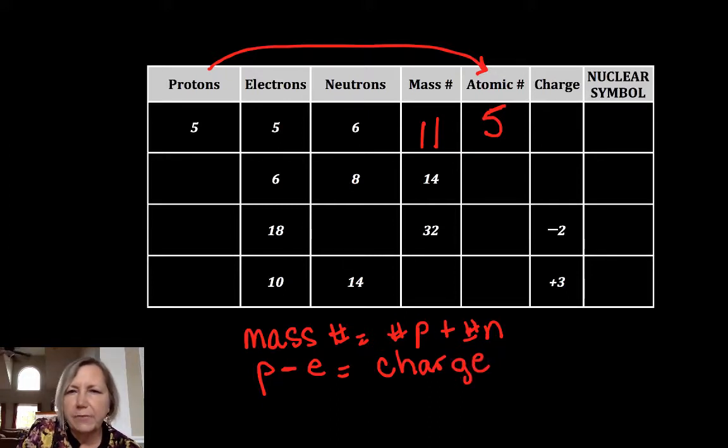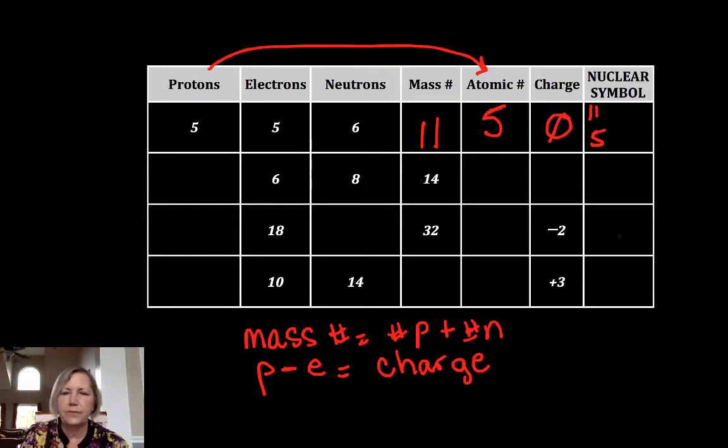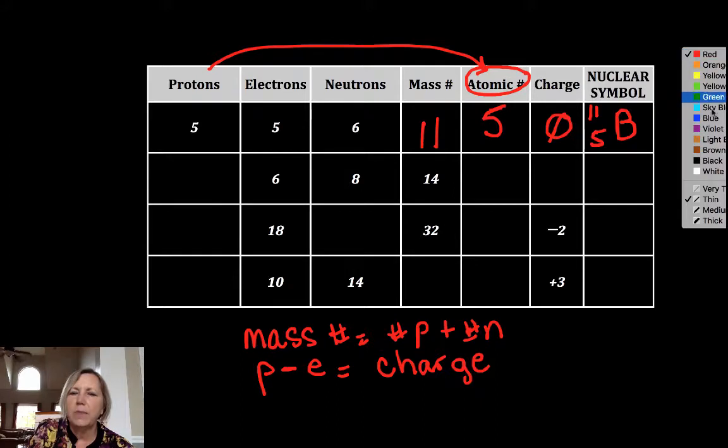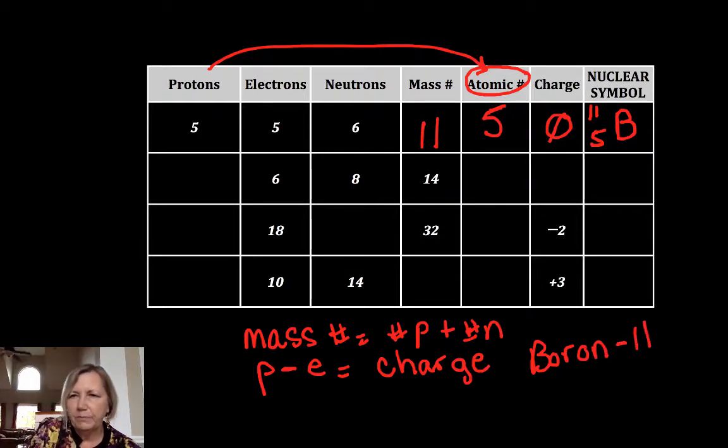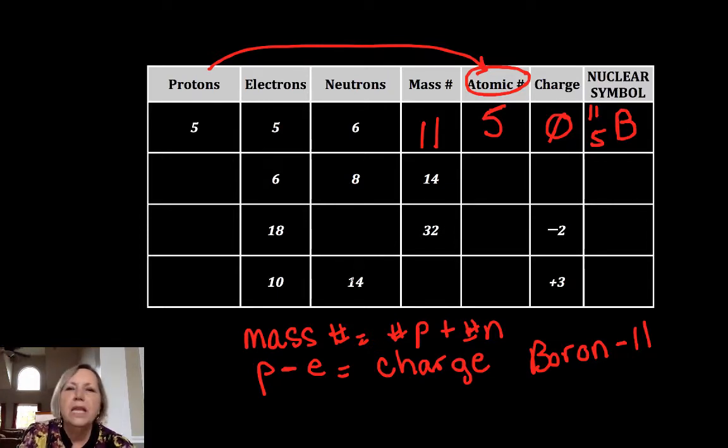The charge in this case is five minus five, or it's a neutral atom. We put the mass number in the upper left, the atomic number in the lower left. The atomic number tells us what element it is, so we go to the periodic table and element five is boron. Another way I could reference this if it's neutral is boron hyphen eleven.